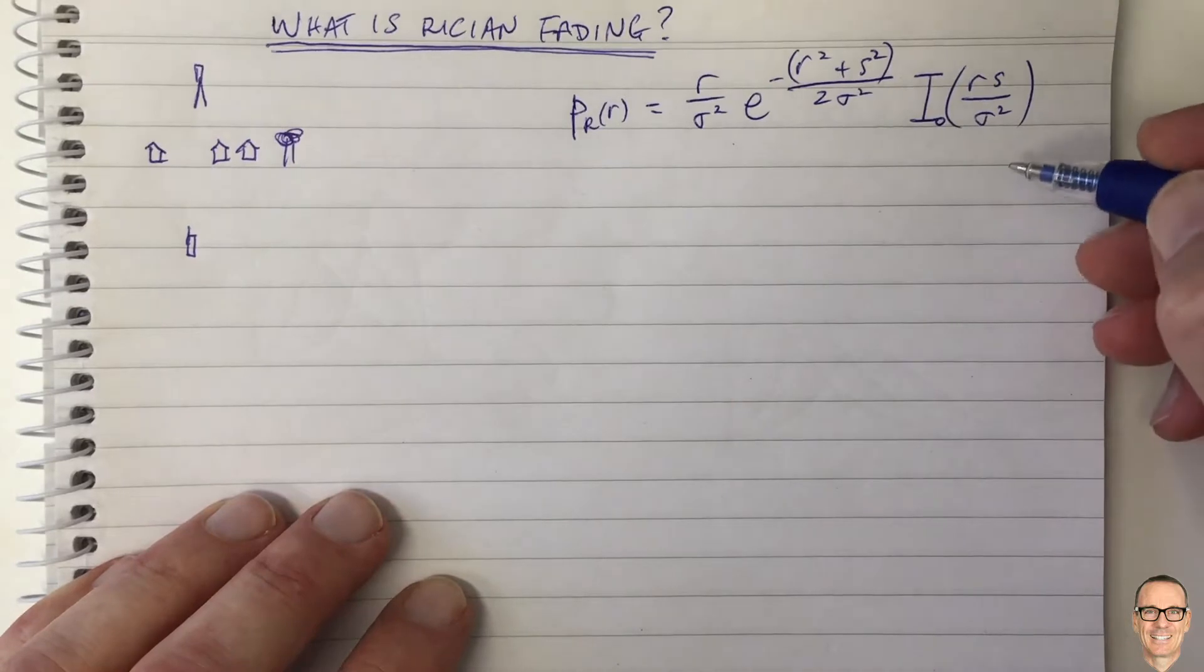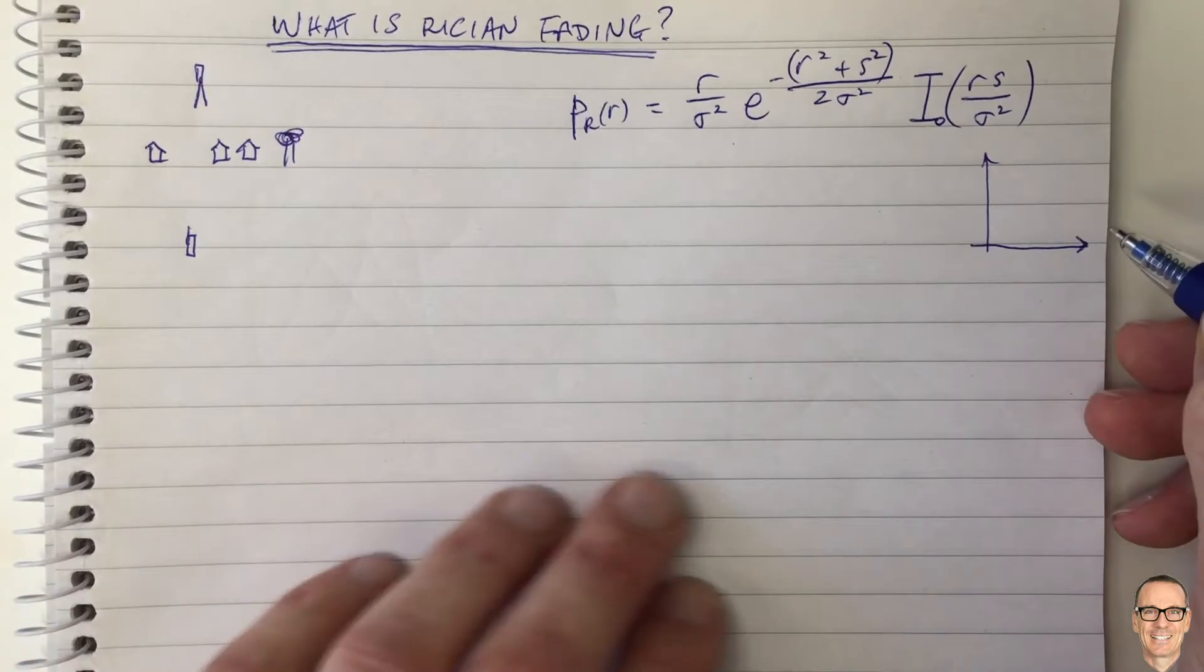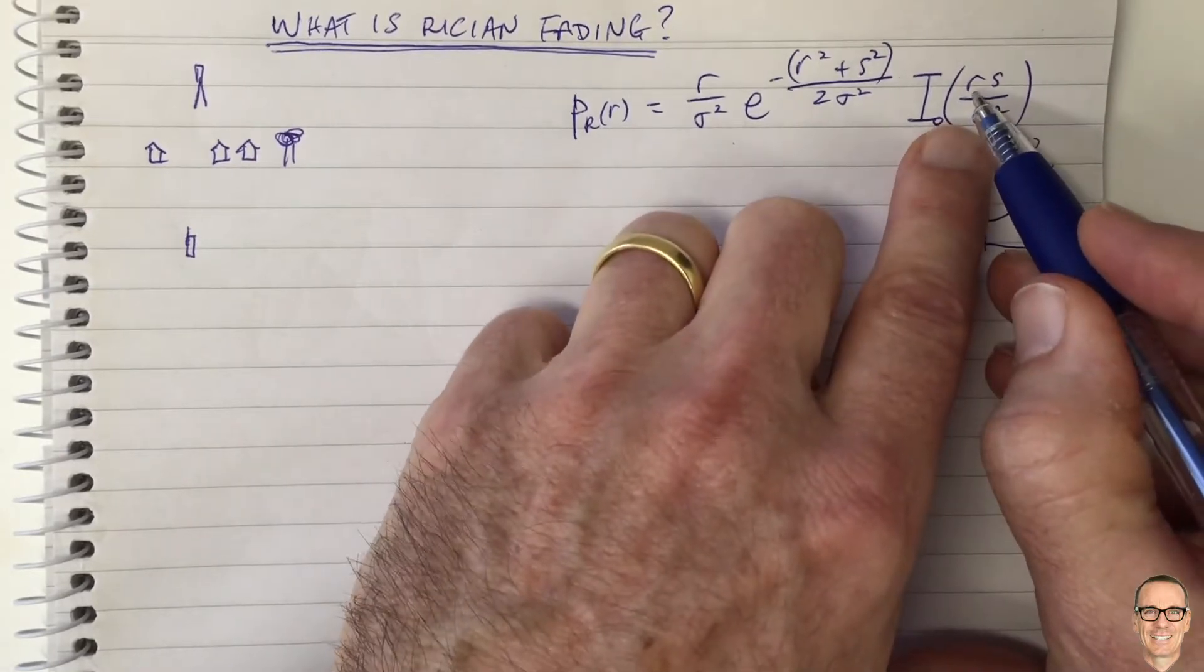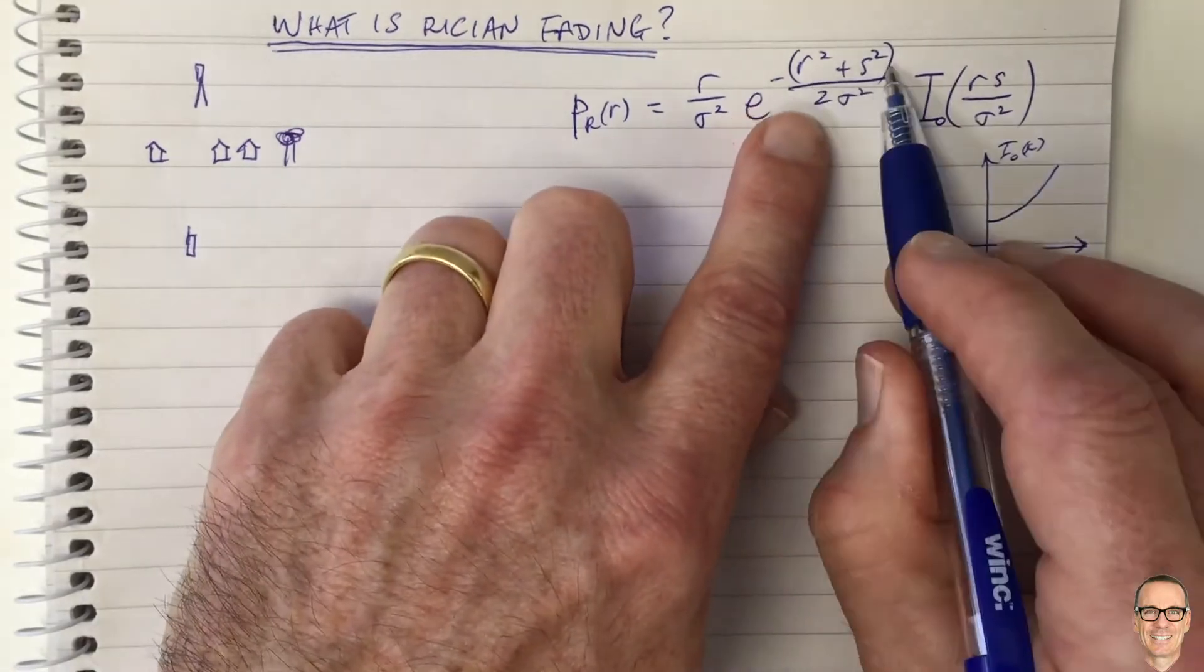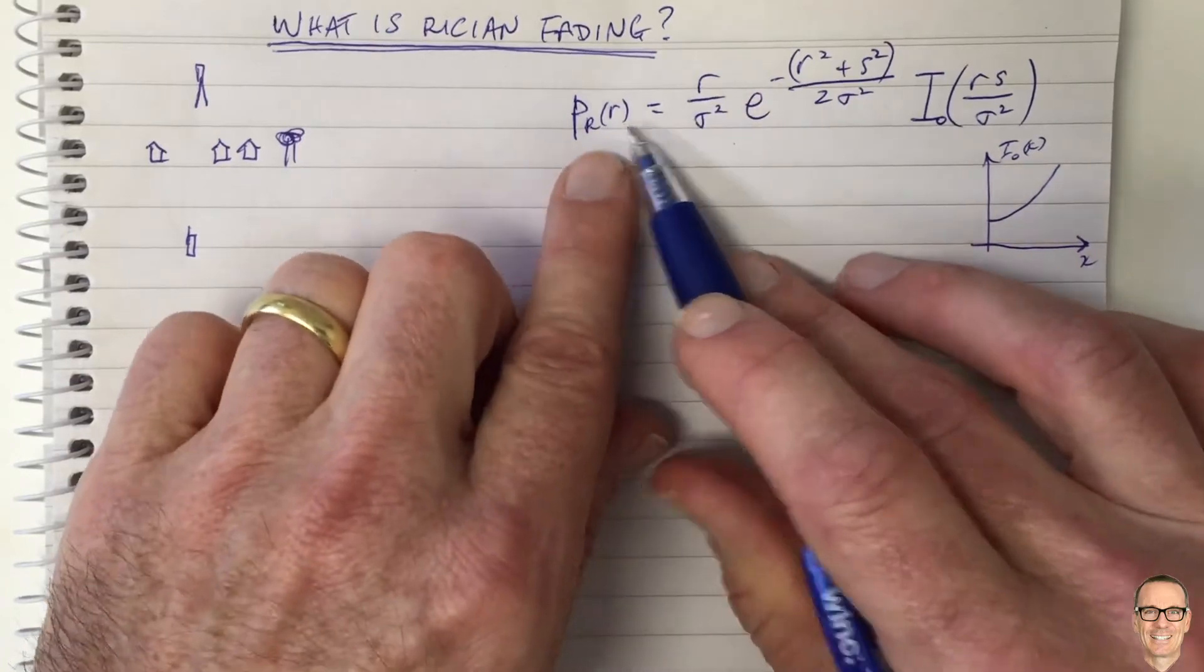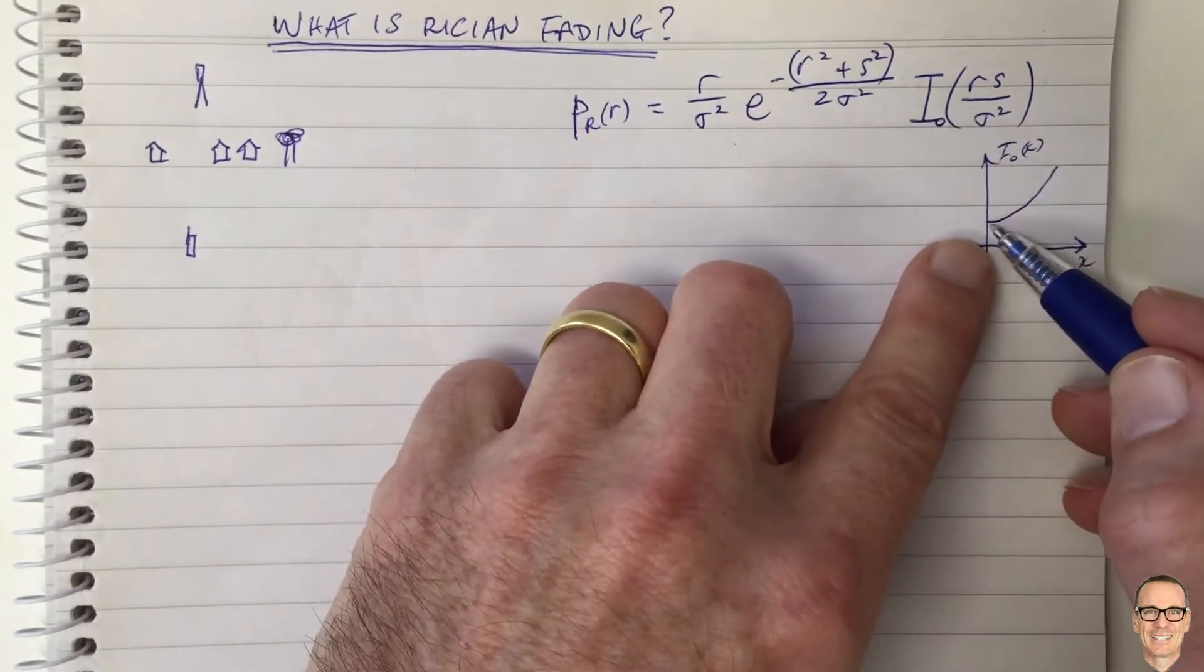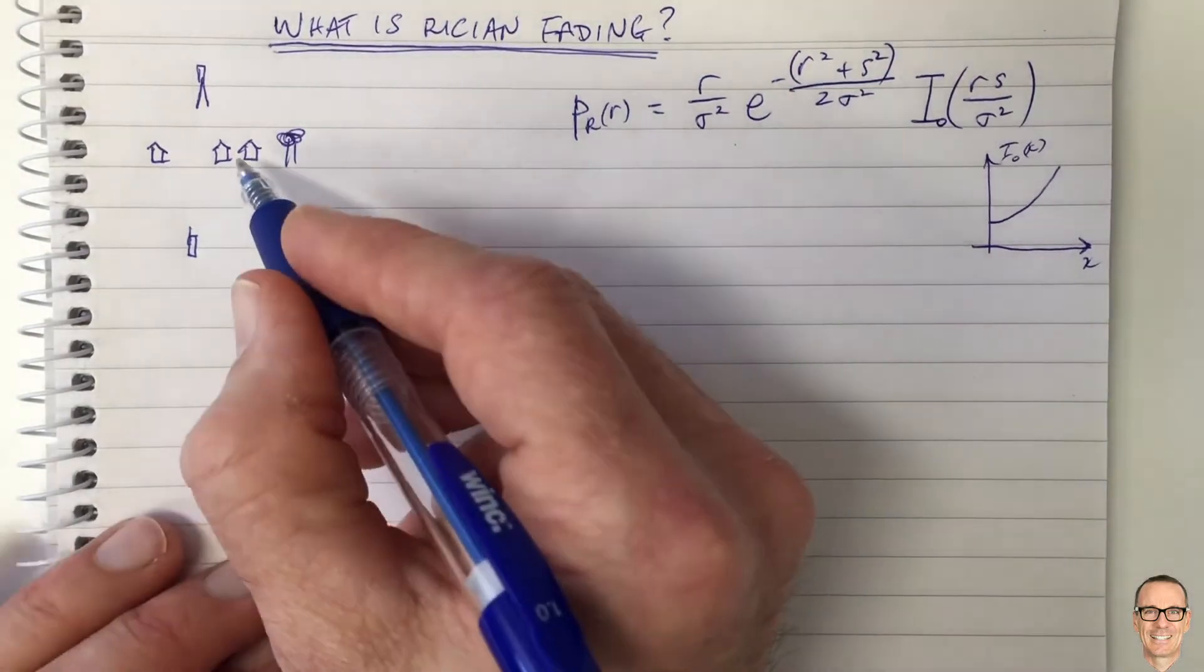The modified Bessel function here is a function that increases as x increases. If this is I naught of x, it looks like this. For bigger values of R and S, this function here is going to increase. Of course, for bigger values of R and S, this function here decreases and this one increases. So this function, as we increase R, is a combination of increasing functions and decreasing functions, and overall we'll get a function that increases and then decreases.